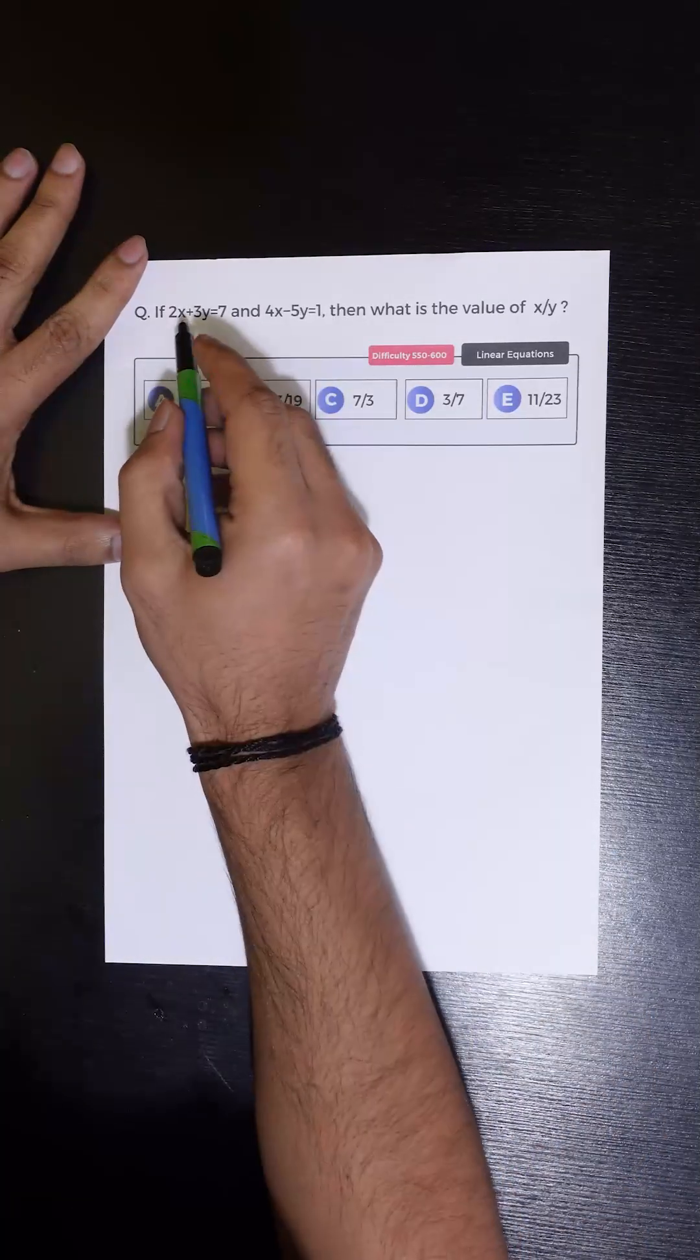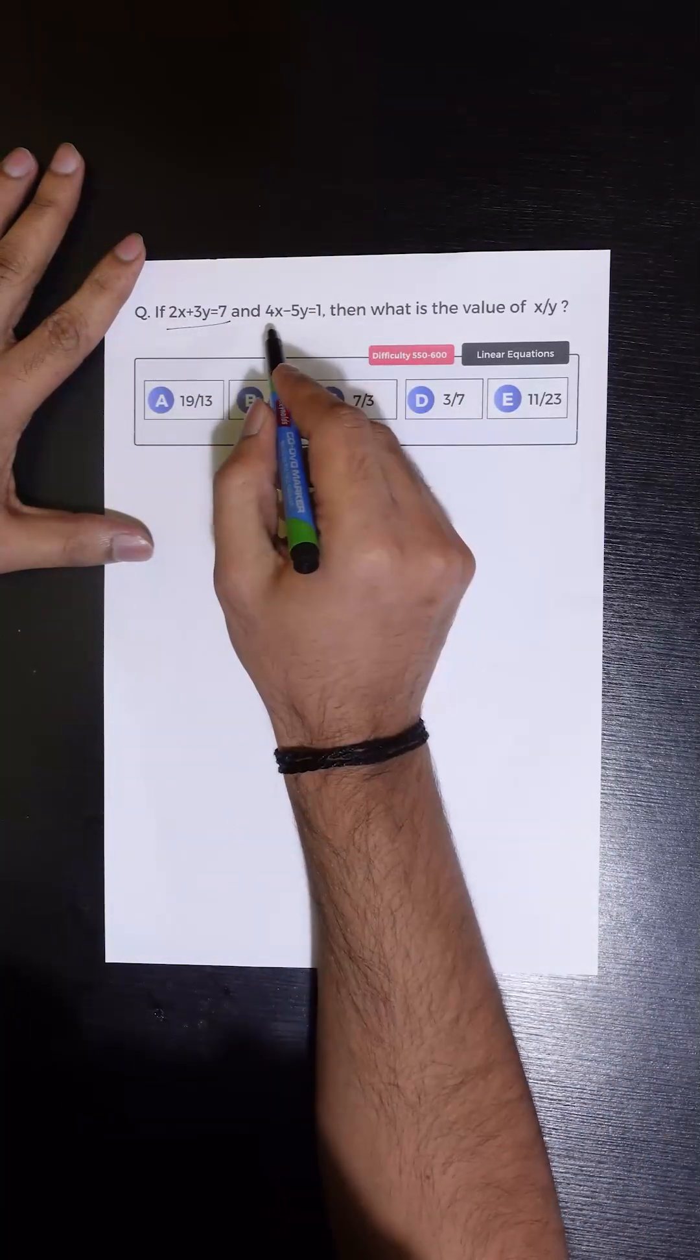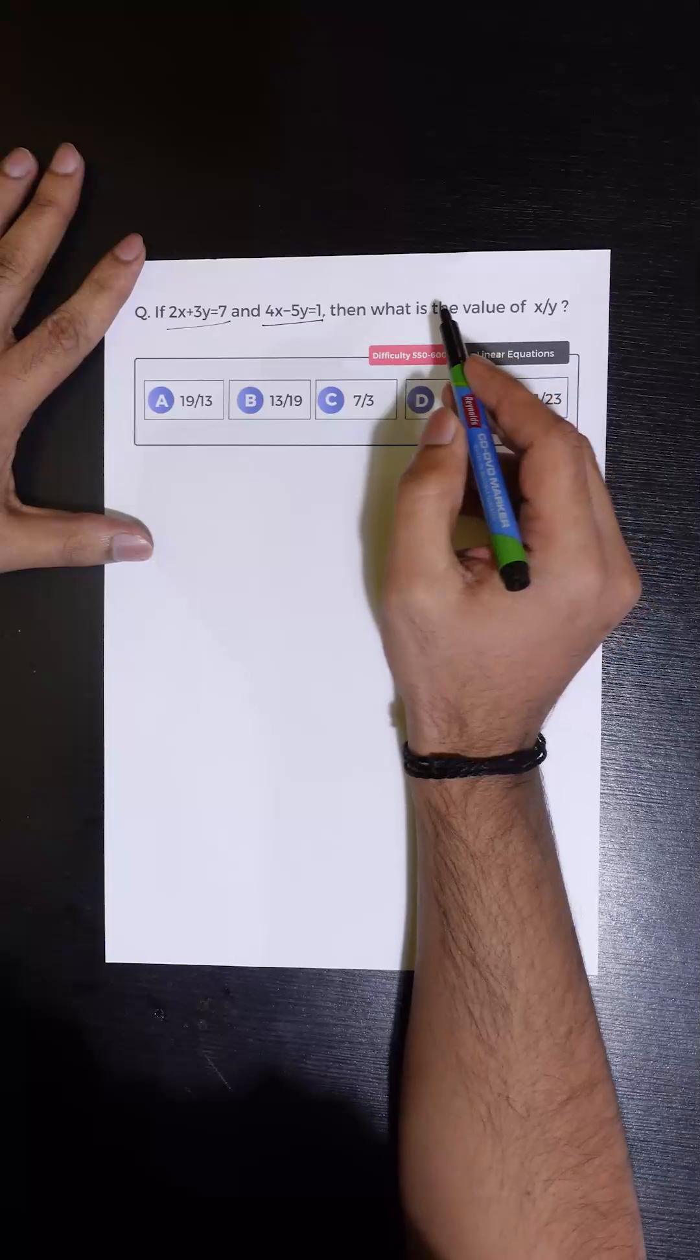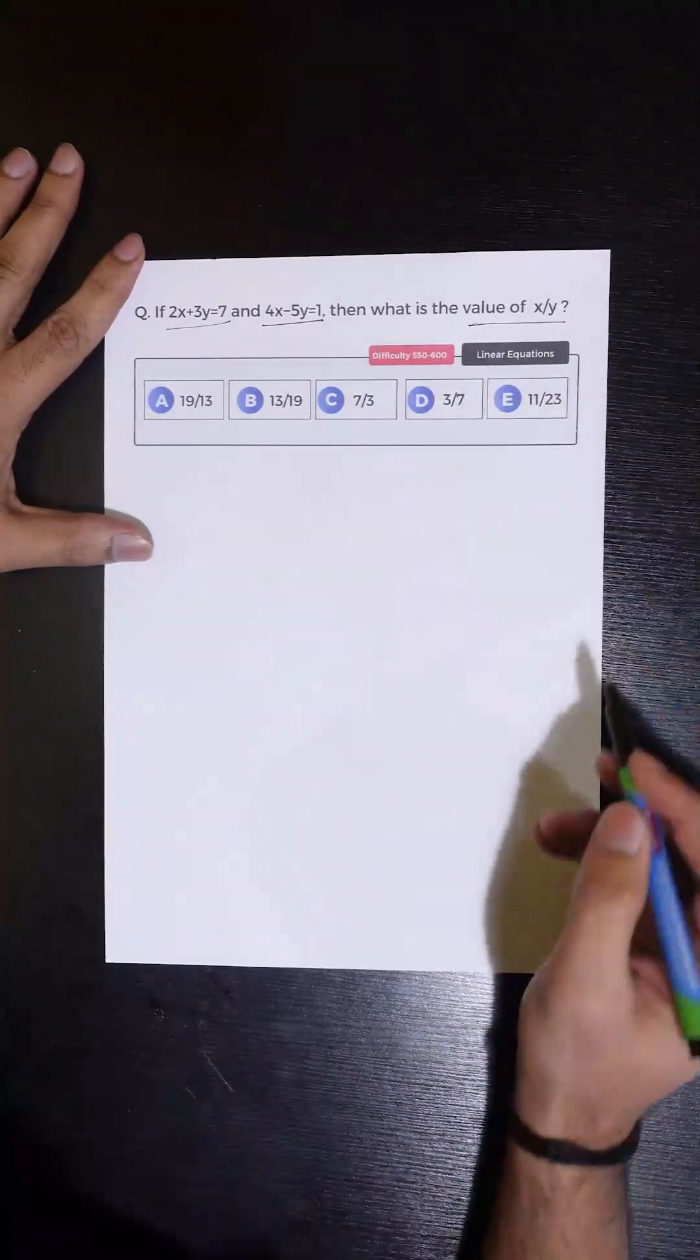Let us see how to solve this question. If 2x plus 3y is equal to 7 and 4x minus 5y is equal to 1, then what is the value of x by y?